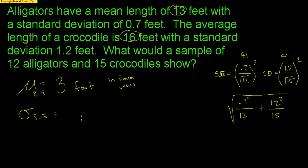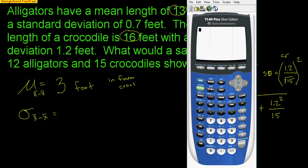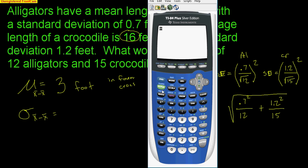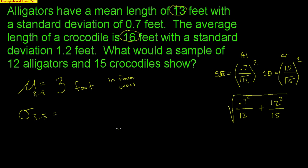Let me show you how to type that on the calculator. I type a giant square root, then inside I do a set of parentheses: 0.7 squared divided by 12, close that off, plus a new set of parentheses: 1.2 squared divided by 15, close that off. And the answer is 0.3699.